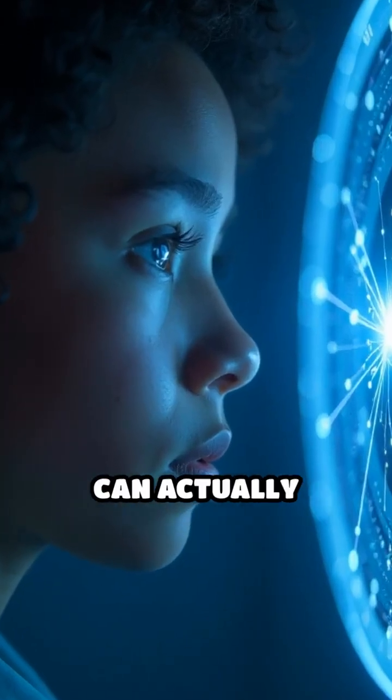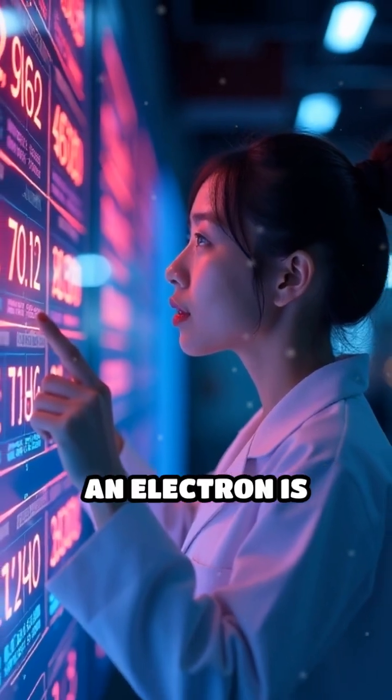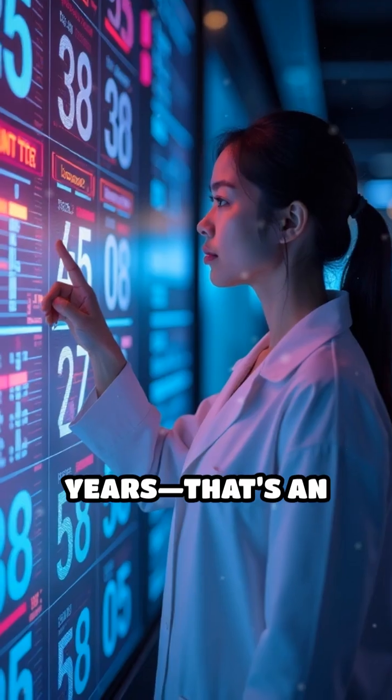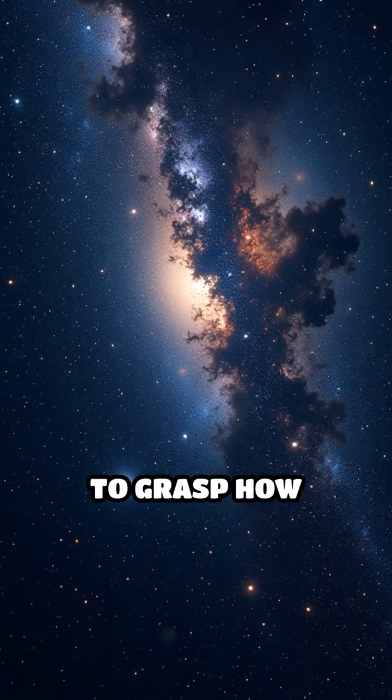Have you ever wondered how long an electron can actually exist? Scientists estimate that the minimum lifetime of an electron is about 6.6×10²⁸ years. That's an astonishing 66,000 yotta years.